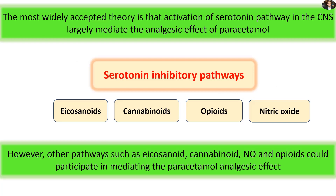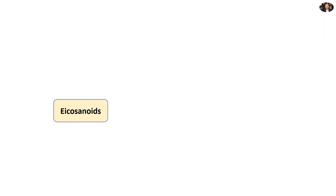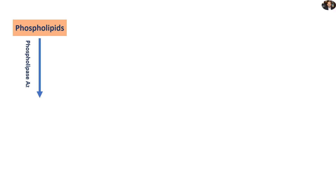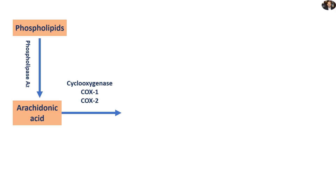Now let's go back to the other suggested mechanisms of paracetamol action — this time, the eicosanoid system. Eicosanoid production pathways start from the cell membrane phospholipid, which is degraded by phospholipase A2 enzymes to produce arachidonic acid. Arachidonic acid is metabolized by a famous family of isoenzymes known as cyclooxygenase, abbreviated as COX. There are two well-known isoenzymes of this family: COX-1 and COX-2.